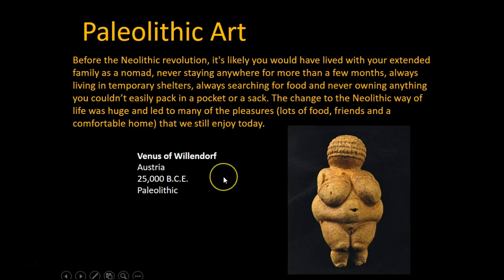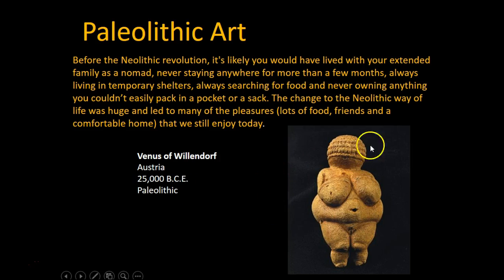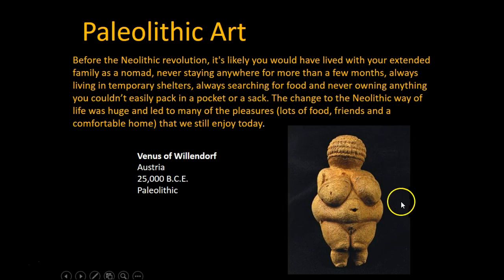This is the Venus of Willendorf. This is from the Paleolithic period and it was found in Austria — prehistoric Europe. As you can see, it's very tiny; I know you can't tell from this image, but it is small — you could hold this in your hand. So Paleolithic art is going to be small, portable, and very small in scale, usually.